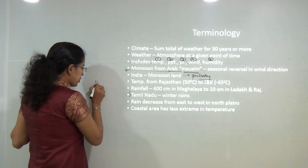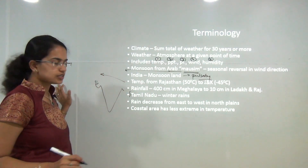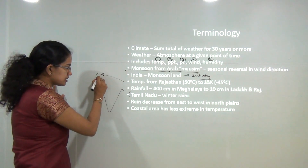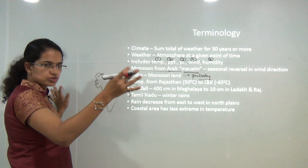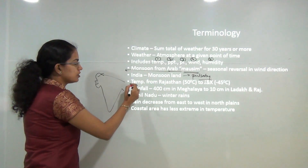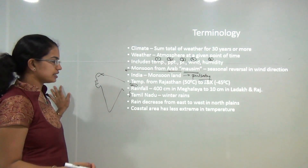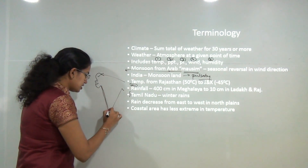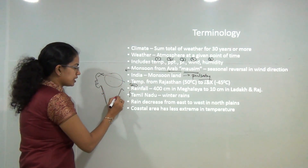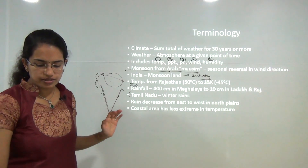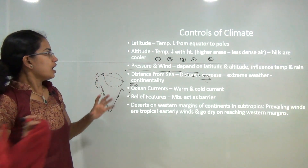On the map of India, rainfall decreases as one moves from east to west. The westernmost region, Rajasthan, is a desert, while in the northeast extreme, Meghalaya has the highest rainfall. Coastal regions have less extreme temperatures compared to the mainland, as pressure differences are not as extreme along the coasts.